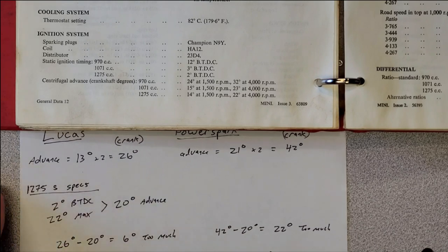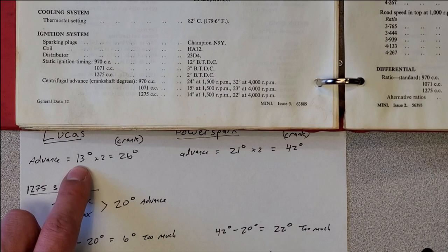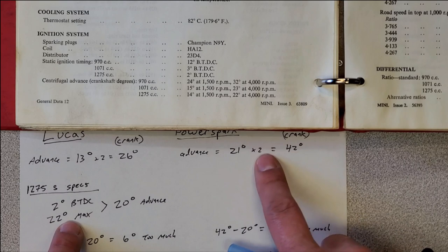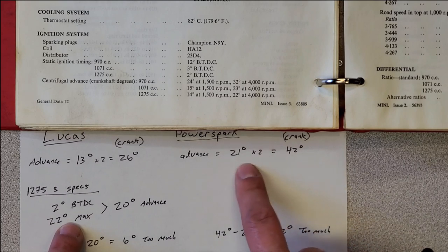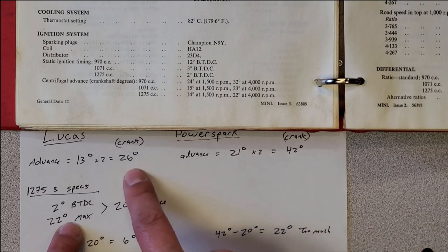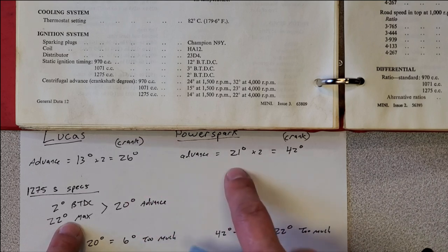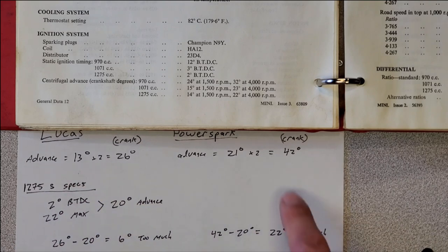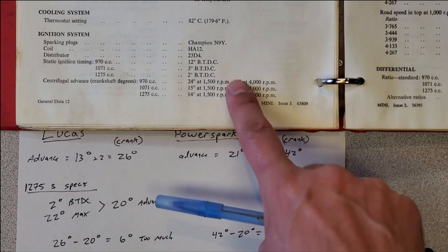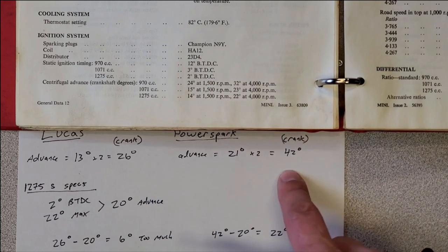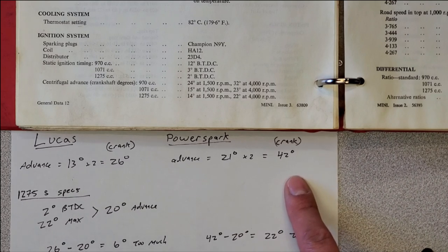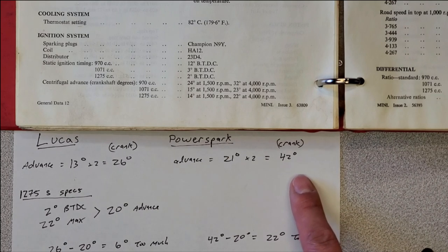Now, if we had a unit that needed 13 degrees, then this Lucas one would have been perfect. However, the PowerSpark unit had eight degrees too much compared to this one. So this is why we need to measure our advance cams to find out where our units are. Otherwise, we can end up having way too much timing. In this particular example, that is way too much timing.